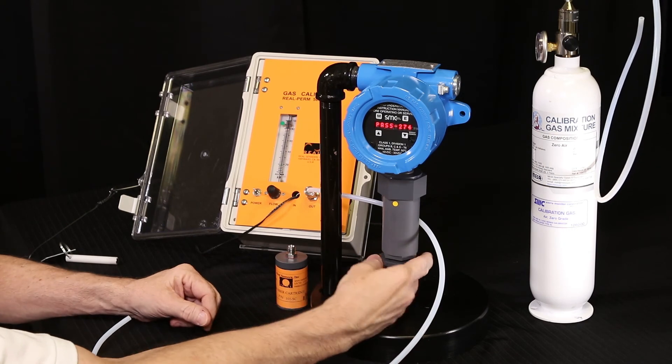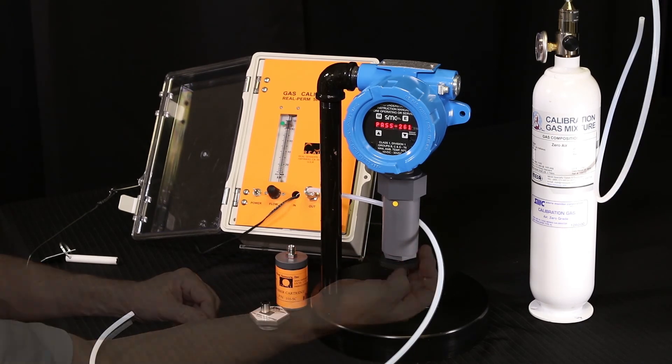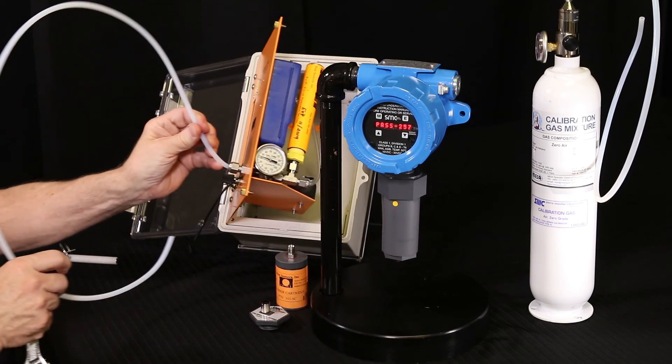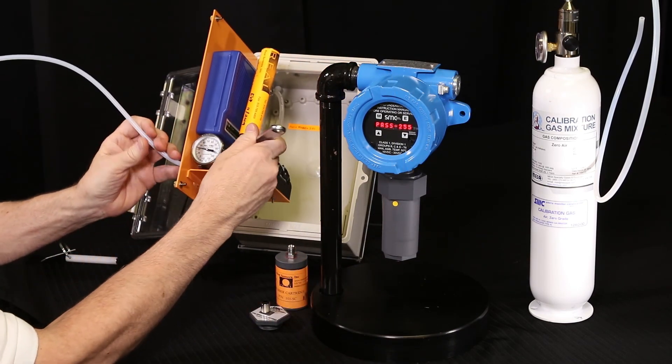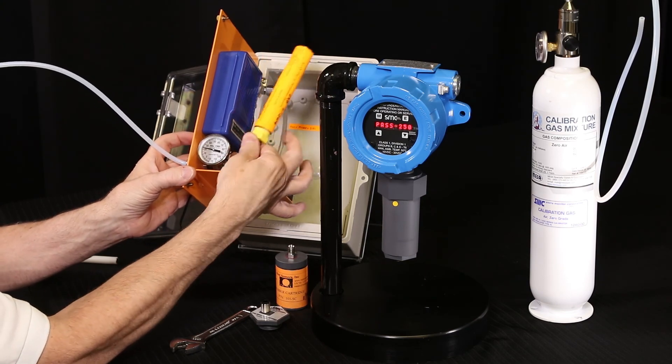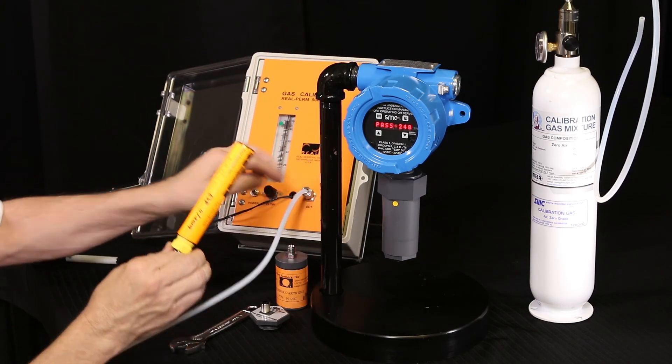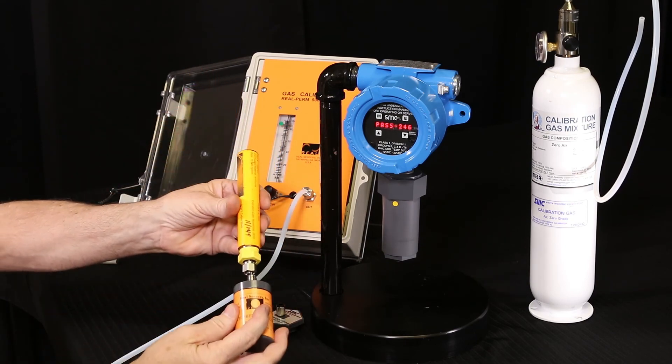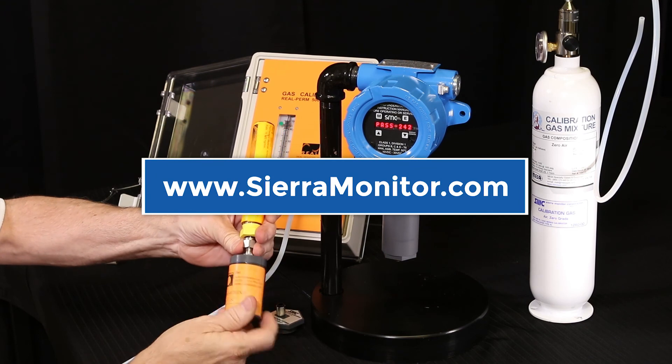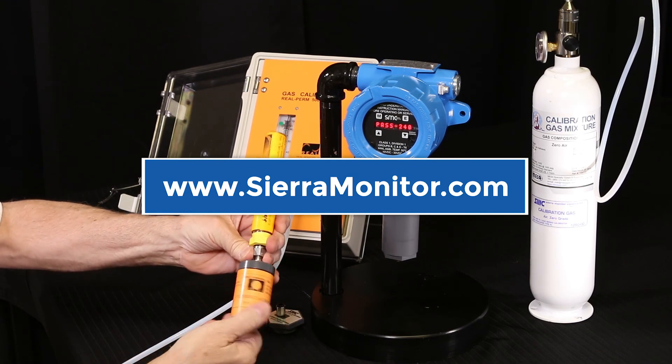After five minutes, the global cal procedure will be completed and the detector will be in full operation. Remove the permeation tube from the calibrator and store with the scrubber cap installed. Through the simple and time-saving global cal procedure, calibrating a gas detector has never been easier. For additional questions, please go to www.sierramonitor.com.